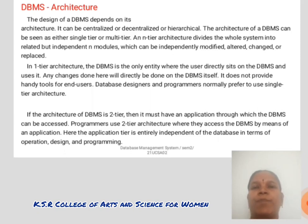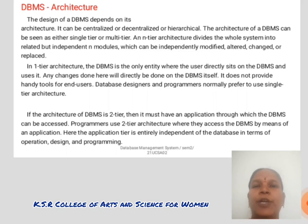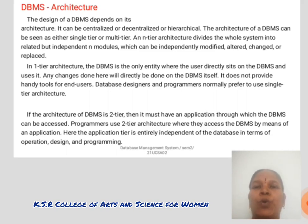DBMS Architecture. The database management depends on its architecture. It can be centralized, decentralized, or hierarchical. The architecture of DBMS can be seen as either single-tier or multi-tier. A multi-tier architecture divides the whole system into related but independent modules which can be independently modified, altered, changed or replaced. In a one-tier architecture, the DBMS is the only entity where the user directly sits on the DBMS and uses it. Any changes done here will directly be done on the DBMS itself. It does not provide handy tools for end users.